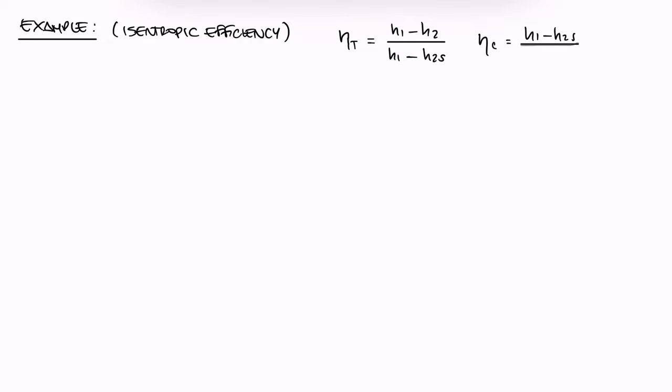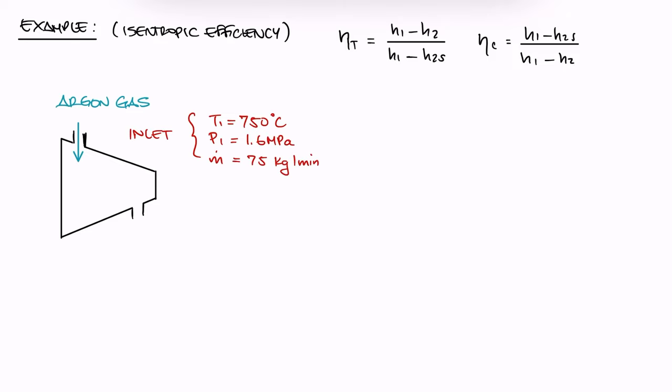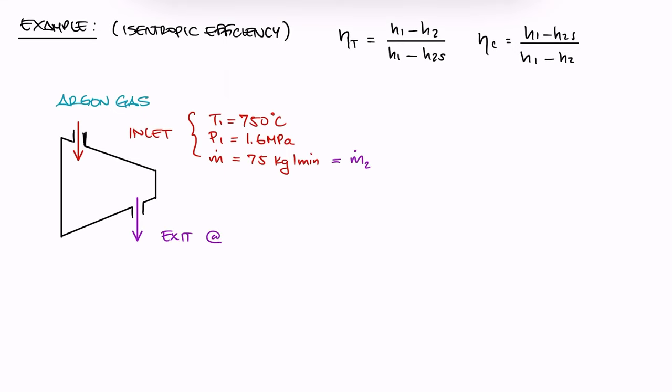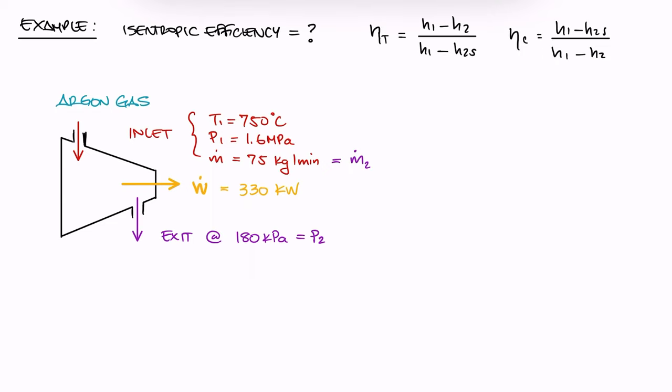Let's look at a simple example related to isentropic efficiency here, where we're only using the expressions we derived today to calculate efficiency. So, argon gas goes into an adiabatic turbine at 750 degrees Celsius and 1.6 megapascals at a rate of 75 kilograms per minute and exits the turbine's exhaust at 180 kilopascals. If the power generated by this turbine is 330 kilowatts, what is its isentropic efficiency? Remember to pause here for a second and try to solve this problem yourself before watching the solution.